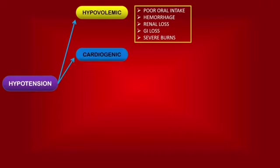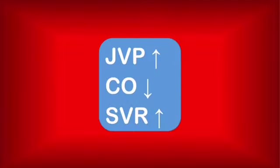Next, there is cardiogenic hypotension. The main idea is that the heart loses the ability to pump efficiently, thus causing a drop in blood pressure values. Any condition that impairs contractility or disrupts the normal hemodynamics of the cardiac cycle will lead to hypotension. Because the heart can't pump properly the blood it receives, blood entering the right side will build up and lead to increased jugular venous pressure, the cardiac output will be low, and the systemic vascular resistance will be increased in an attempt to redirect blood to essential organs.